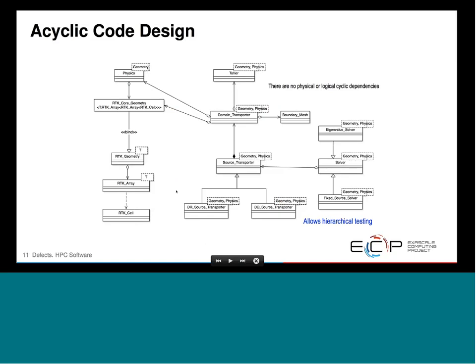Moving on — what do I mean by acyclic code design? I've tried in this presentation to use real examples from our code base. The idea is not to evaluate the quality of our design but to show we're actually using these techniques in real code. Acyclic code design simply means there are no physical or logical dependencies between various components in a code — all associations go one way.